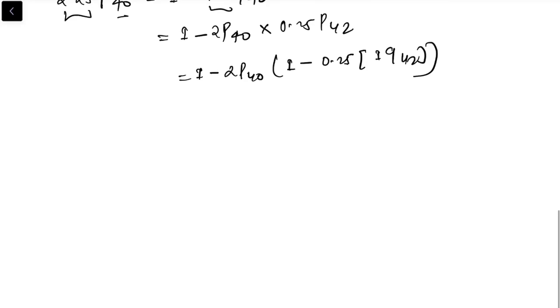Let's do one more example. Suppose you are given 2.75 q40.5. Here t is not between 0 and 1, and x is also not the integer age. So let's first convert this to p form: 1 minus 2.75 p40.5.